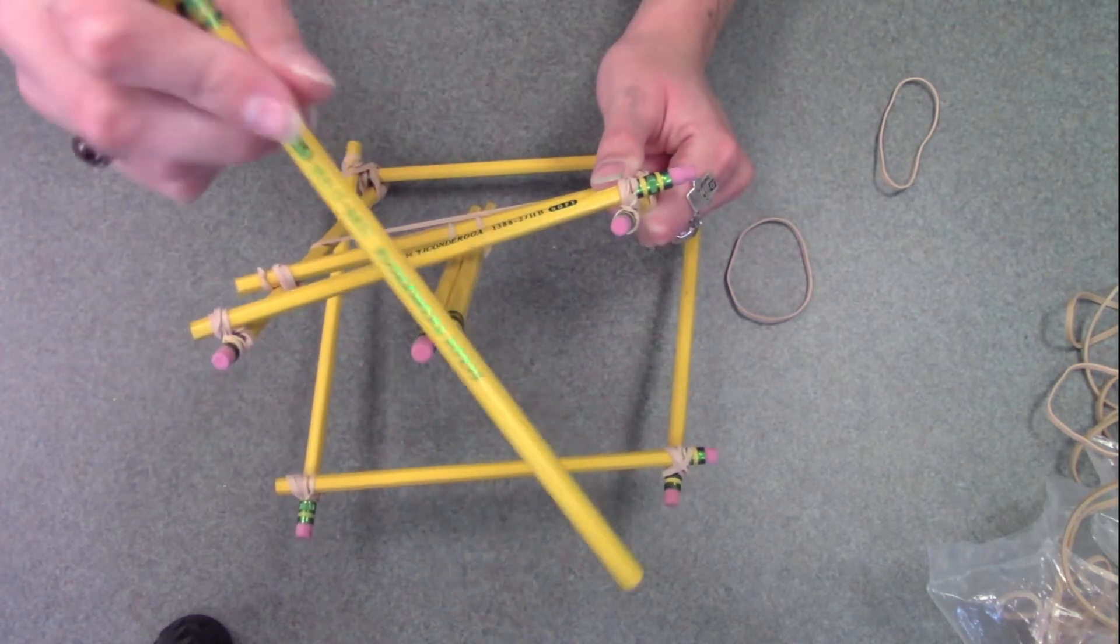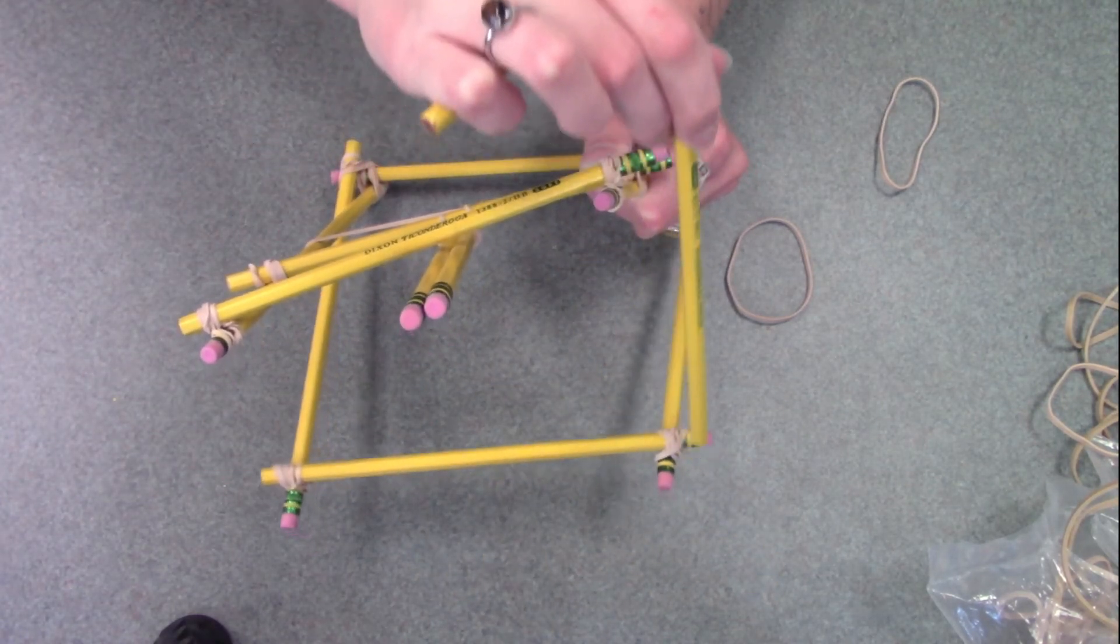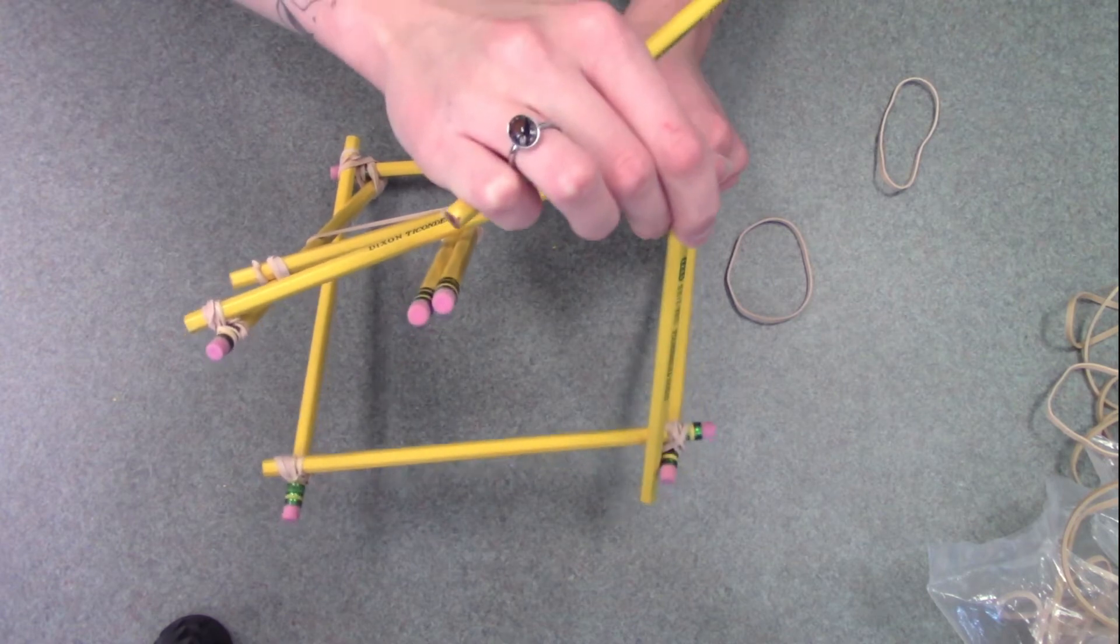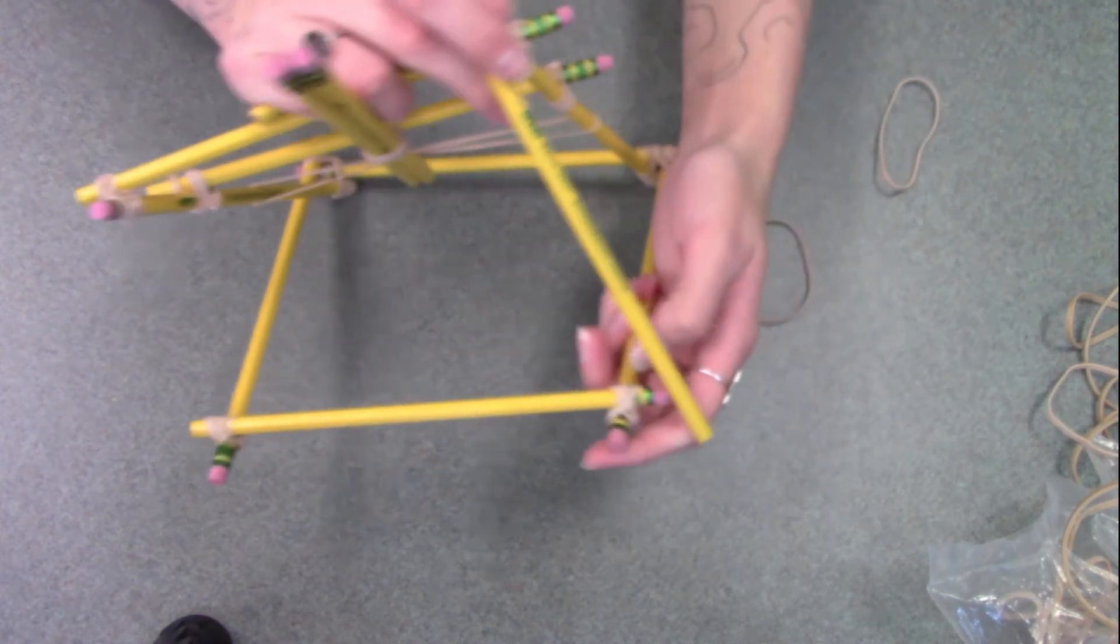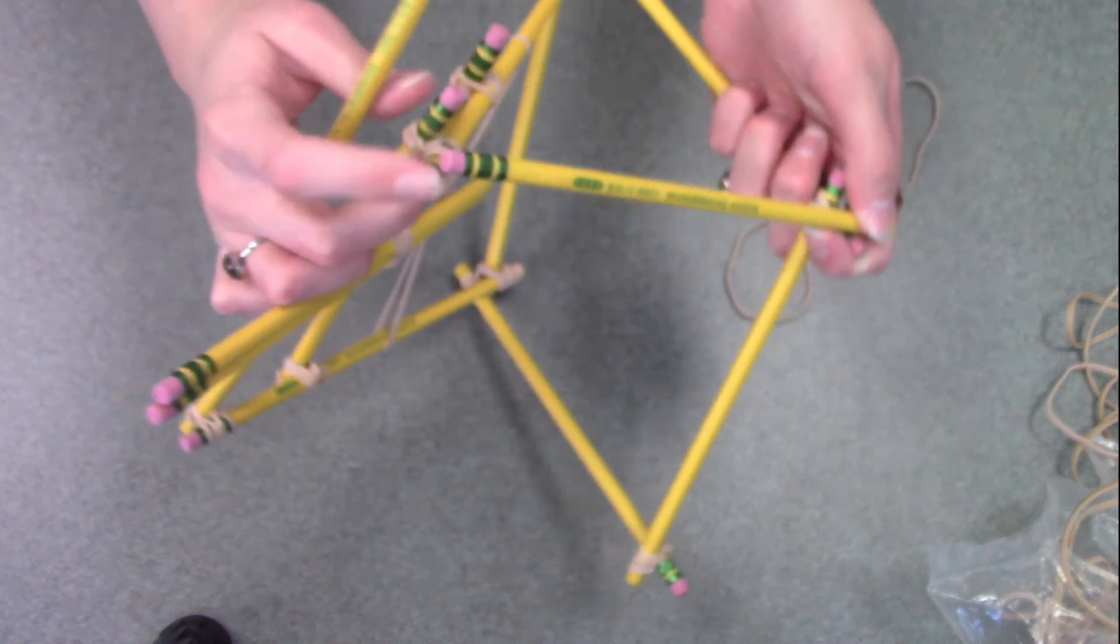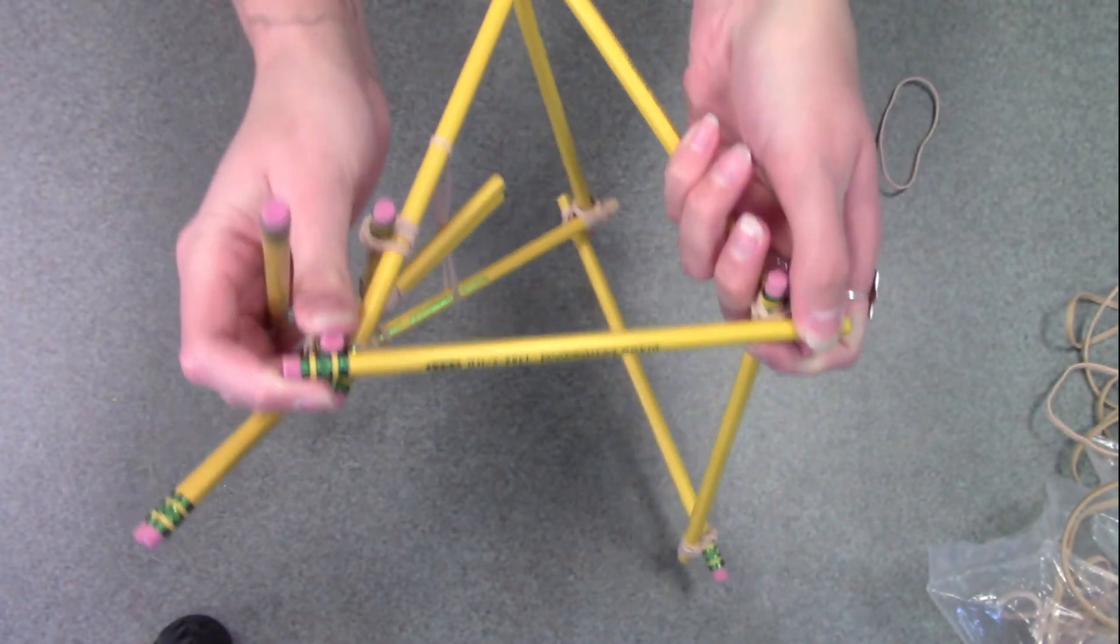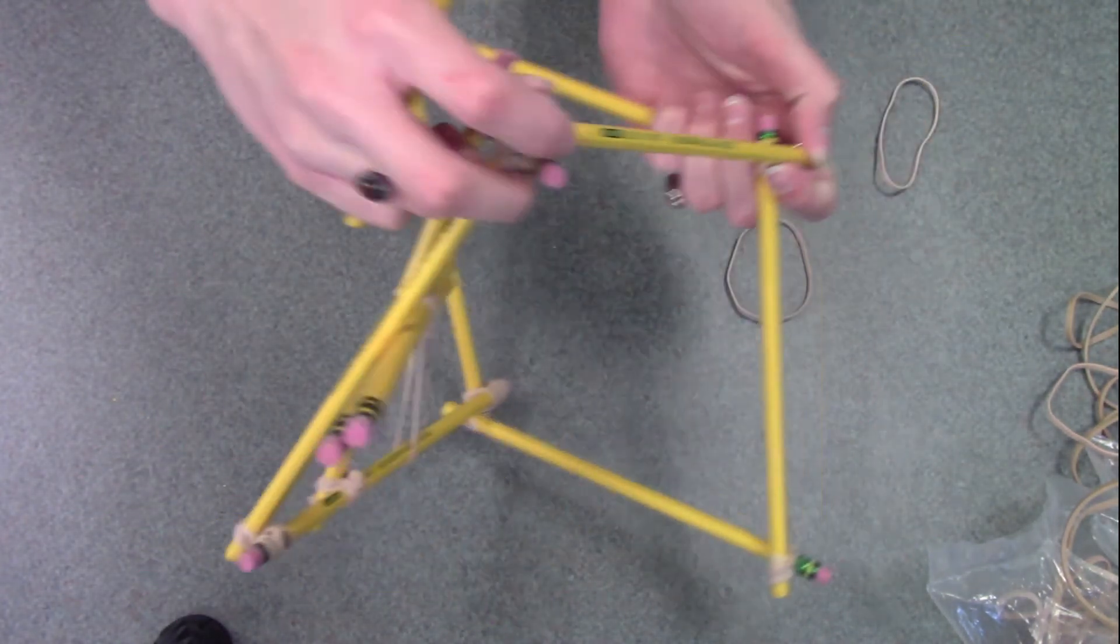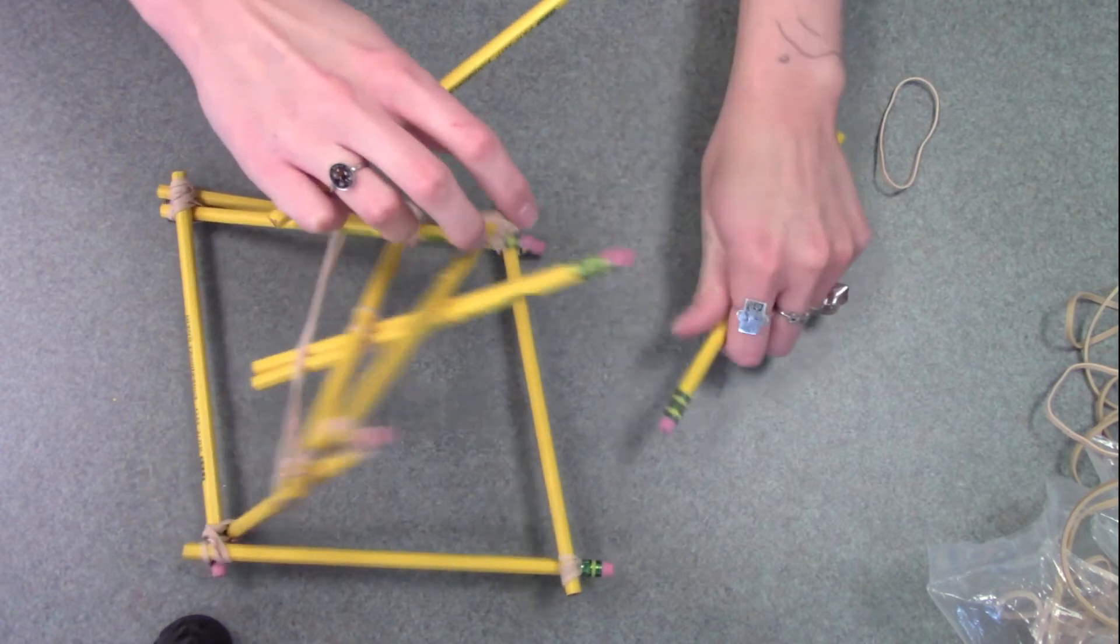You're going to take one pencil and attach it down here to the bottom base. So one end to the bottom base and one end to the top corner of the front. And you're going to do that on both sides.